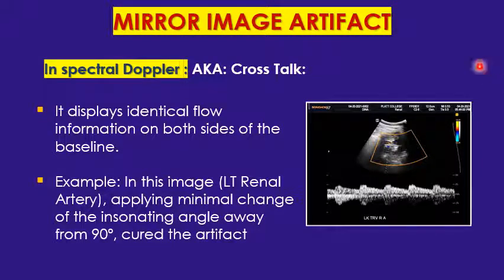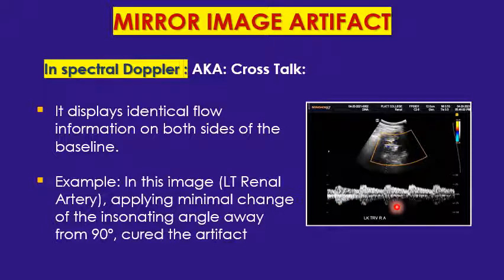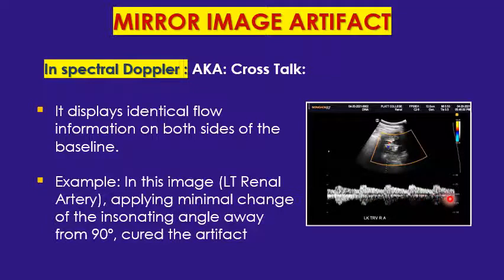In spectral waveform, mirror image is sometimes called crosstalk — you see an identical duplicate waveform above and below the baseline. For example, when scanning the left renal artery from an abdominal view, crosstalk appeared; by changing the angle gradually, the mirror image disappeared and only the correct waveform remained.